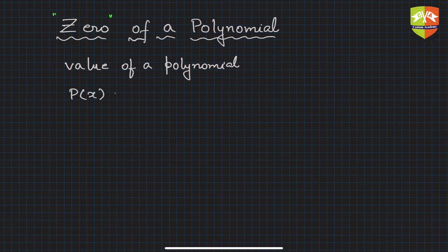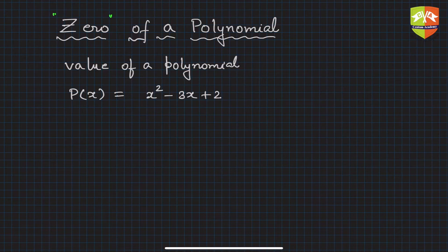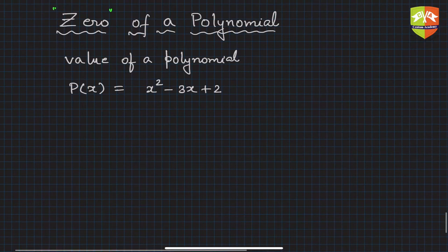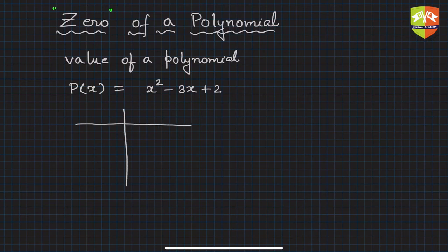Let's say p(x) is x squared minus 3x plus 2. This is a second degree polynomial — a quadratic polynomial. We try to calculate its value at different values of x. So let's make a small table. I am going to take some values of x here and then find the value of p(x).